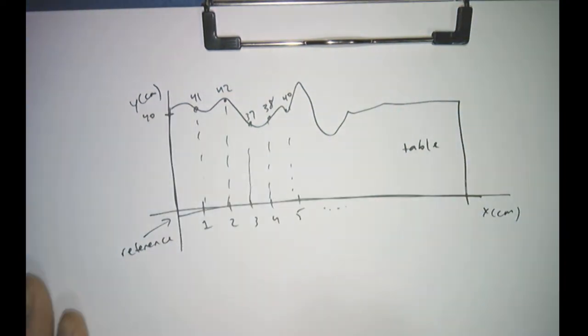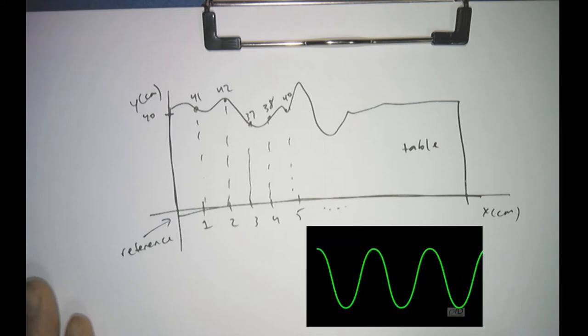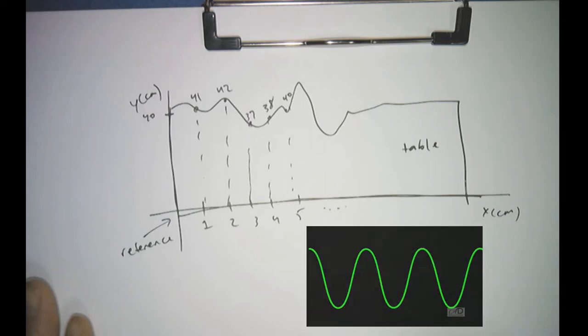Analog-to-digital converters work in exactly the same way. But instead of measuring position, like y versus x in centimeters, what we're measuring is voltage versus time, as we'll see shortly.